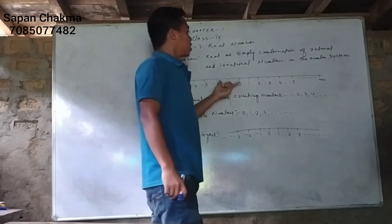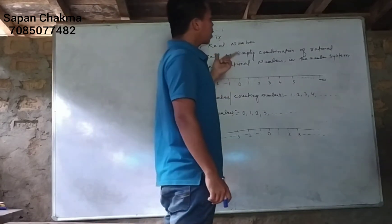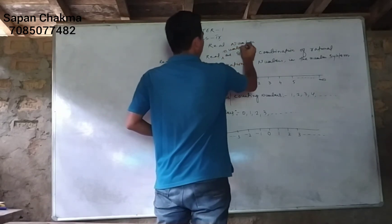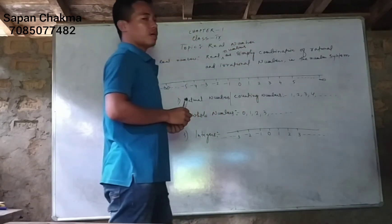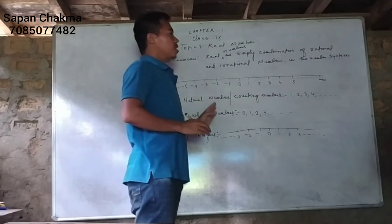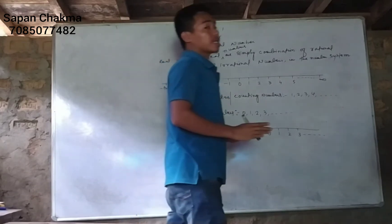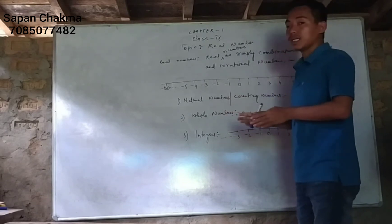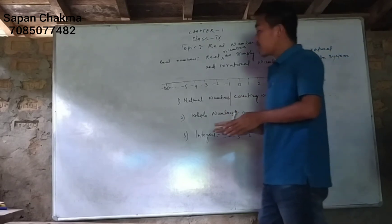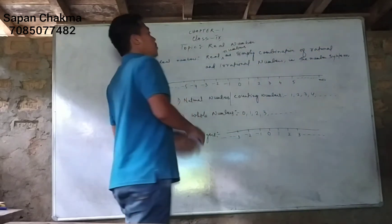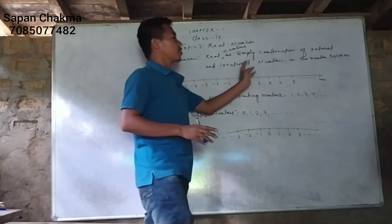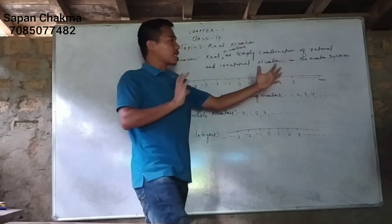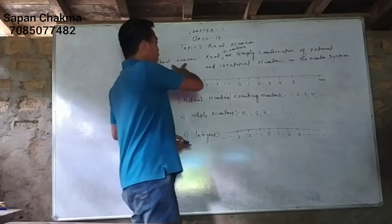Real numbers are simply a combination of rational and irrational numbers in the number system. The real number is the exact number. The exact number is the real number, and the real number includes both rational and irrational numbers. The combined number of these two types is the real number.